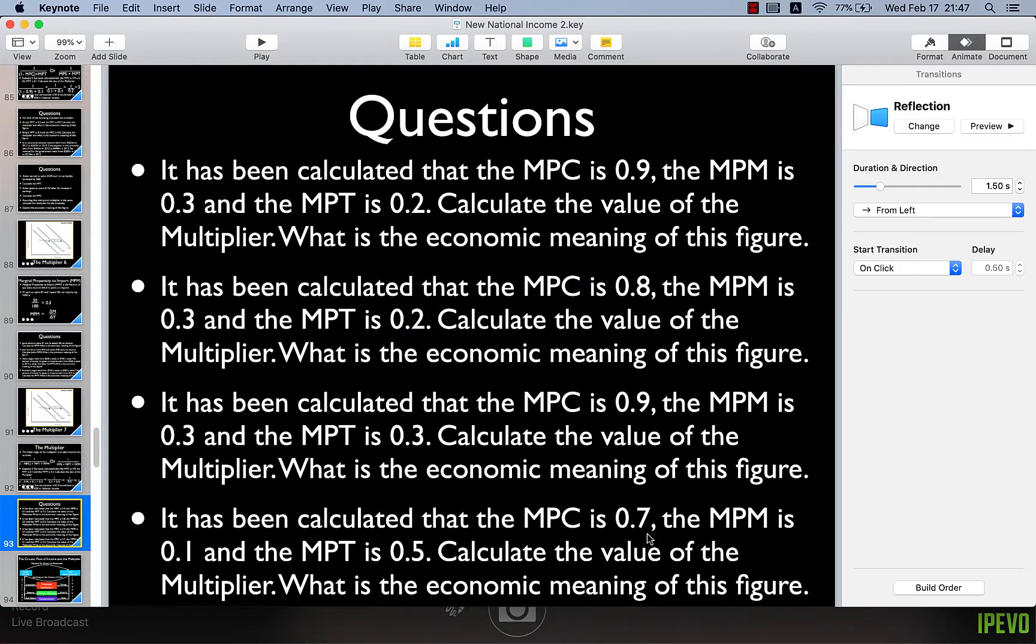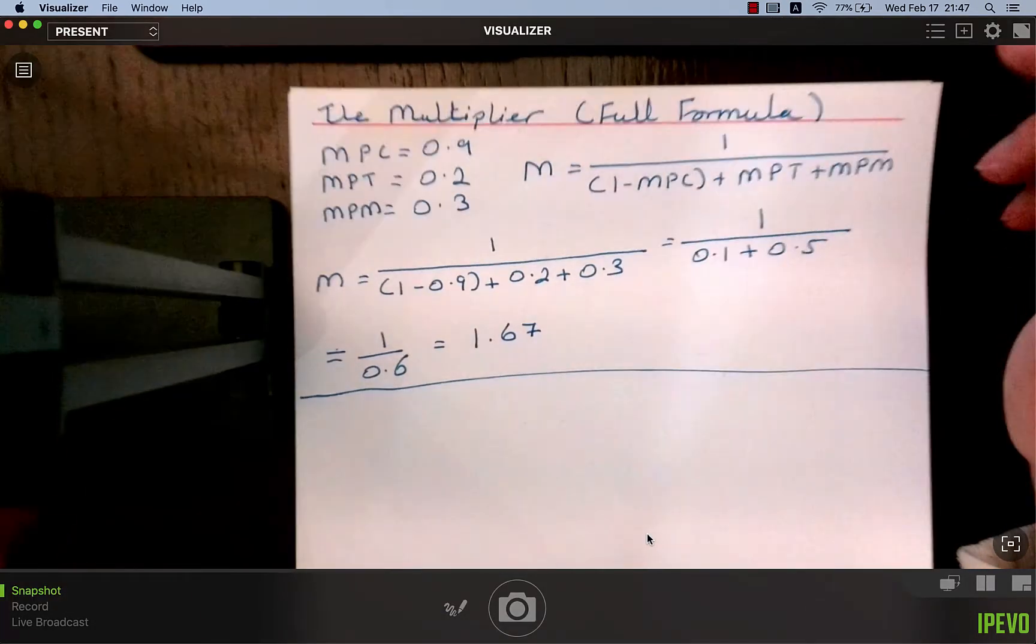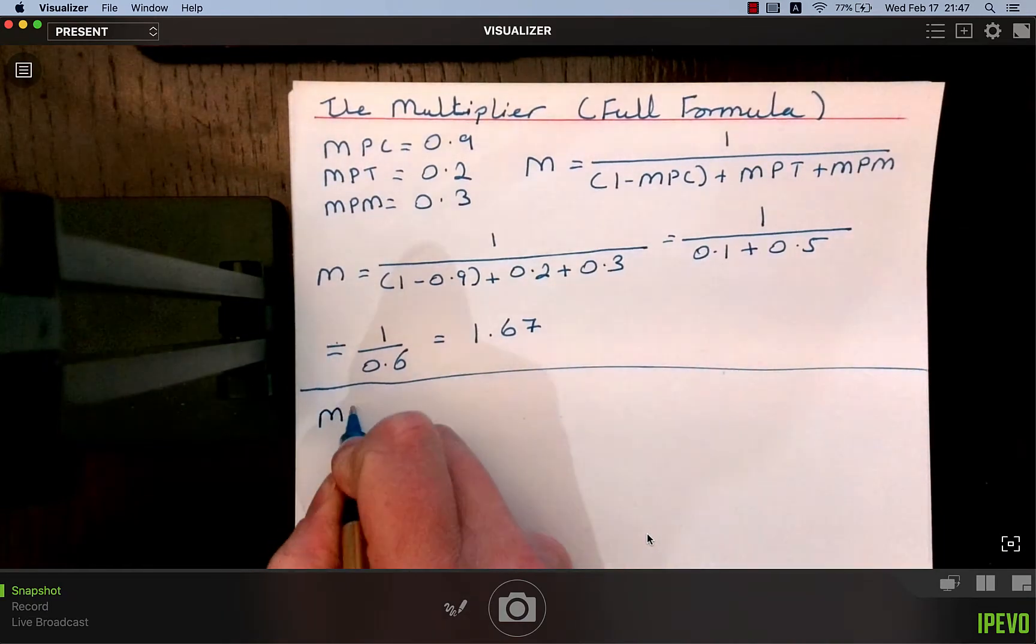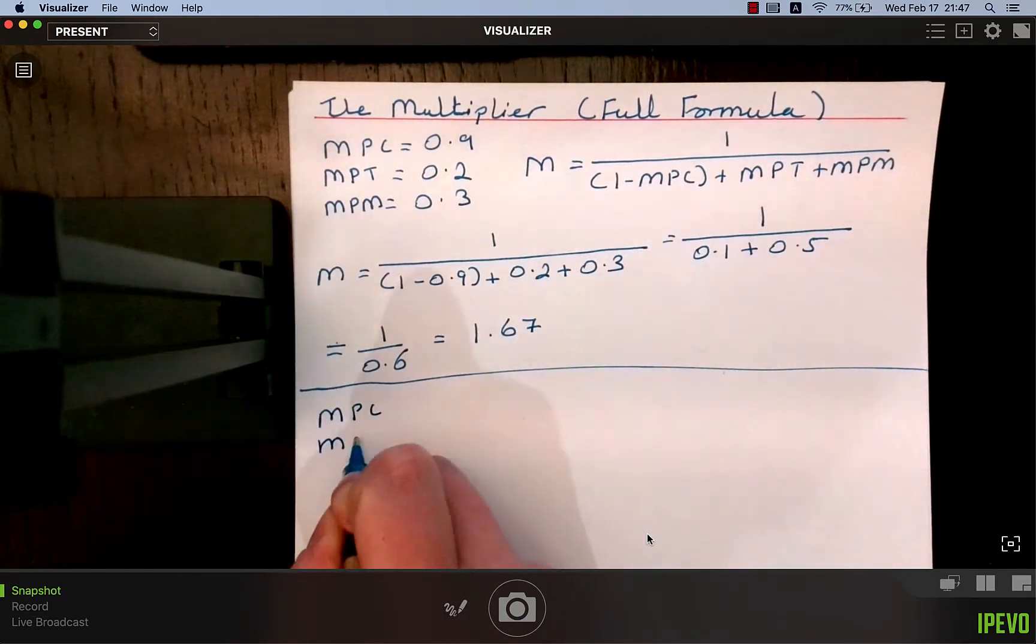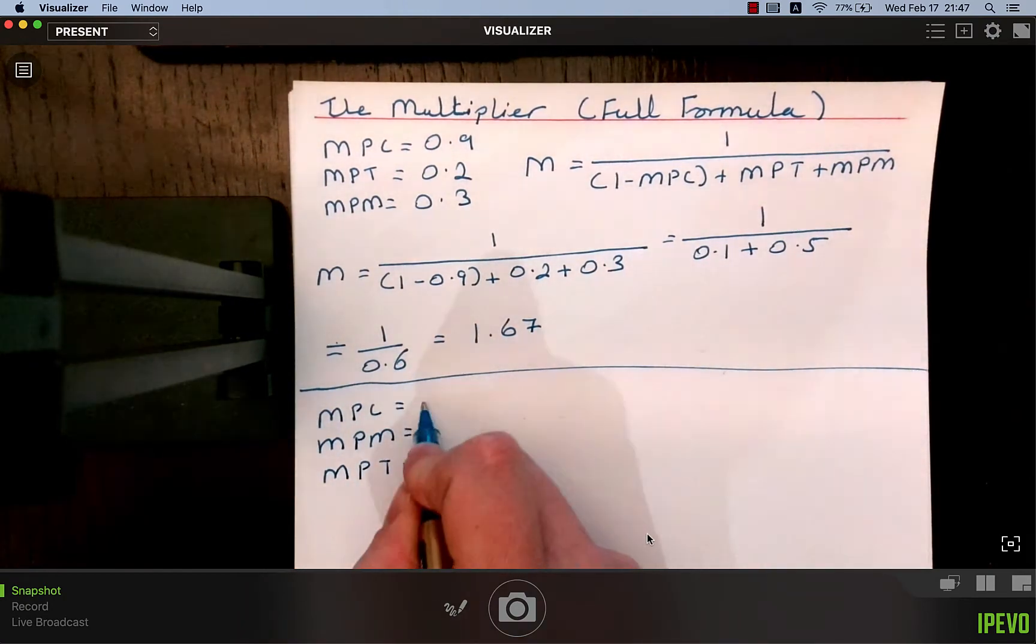Number 2, it has been calculated that the MPC is 0.8, the MPM is 0.3, and the MPT is 0.2. Calculate the value of the multiplier. MPC equals 0.8, MPM equals 0.3, MPT equals 0.2.